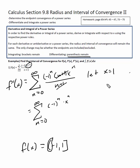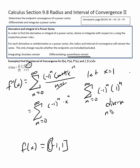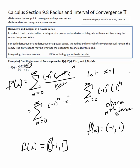So because x equals one diverges, the derivative's interval is going to be open on both ends — parentheses at negative one and at one. That's the first derivative. Now for the second derivative, from n equals zero to infinity, I get negative one to the n times n times x to the n minus one. Because the first derivative is open on both ends, the second derivative is also going to be open on both ends.